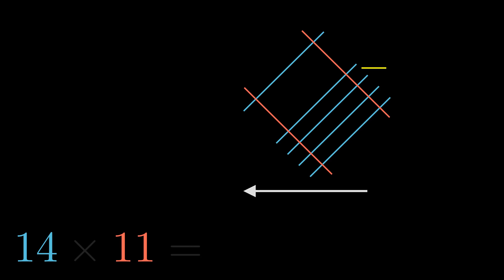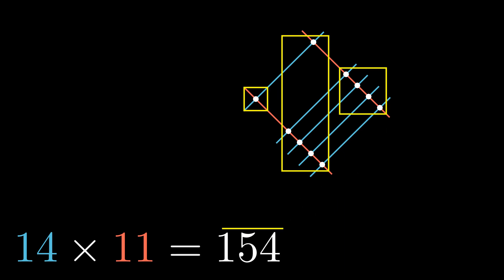Working our way from the right to the left, we've got four intersection points in the right column, another five intersection points in the middle column, and only one in the left column. Hence the product of 14 and 11 is 154.